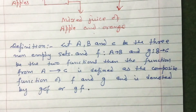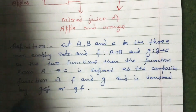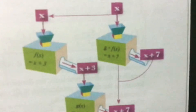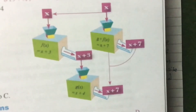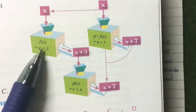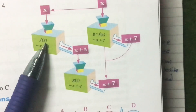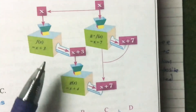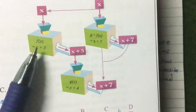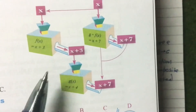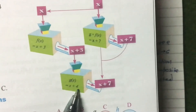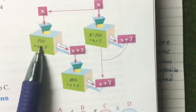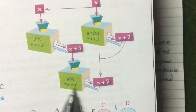I will show you one figure where we can see composite function clearly. Here, the first machine is f(x) and the second machine is g(x). The first machine performs the function x plus 3, and the second machine performs x plus 4. The composite work performed by Machine A and Machine B altogether is x plus 7.